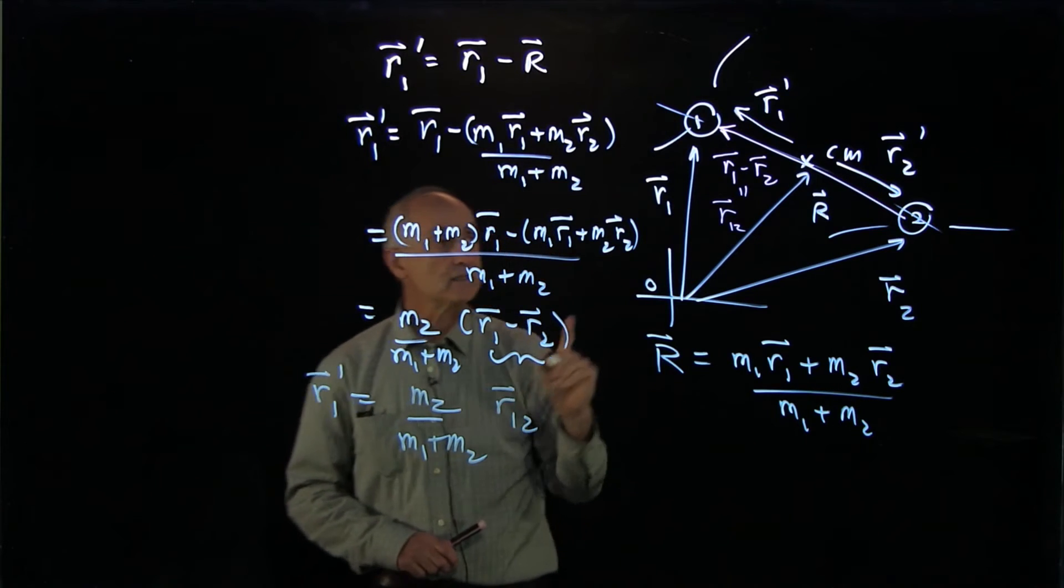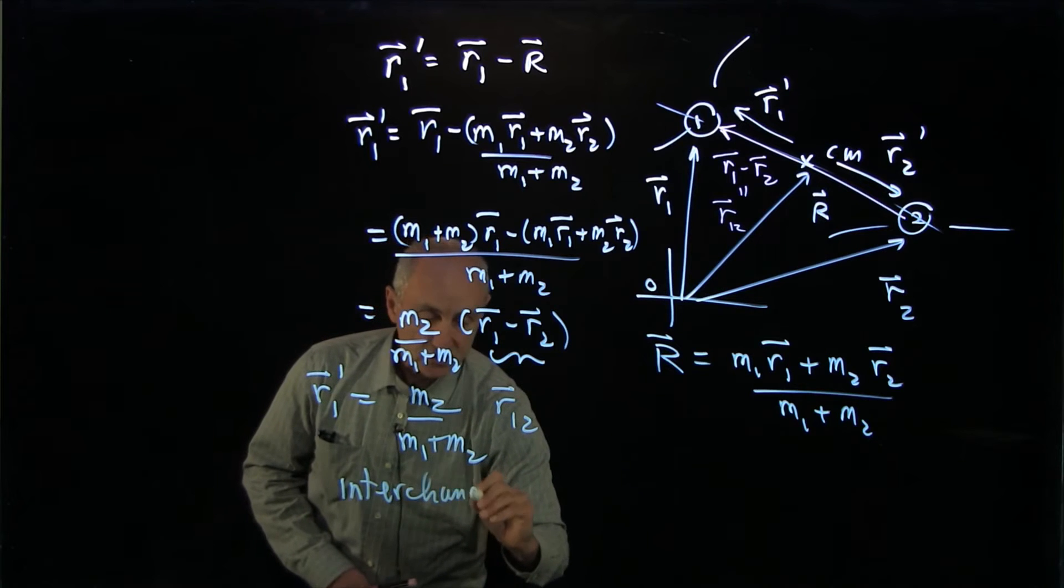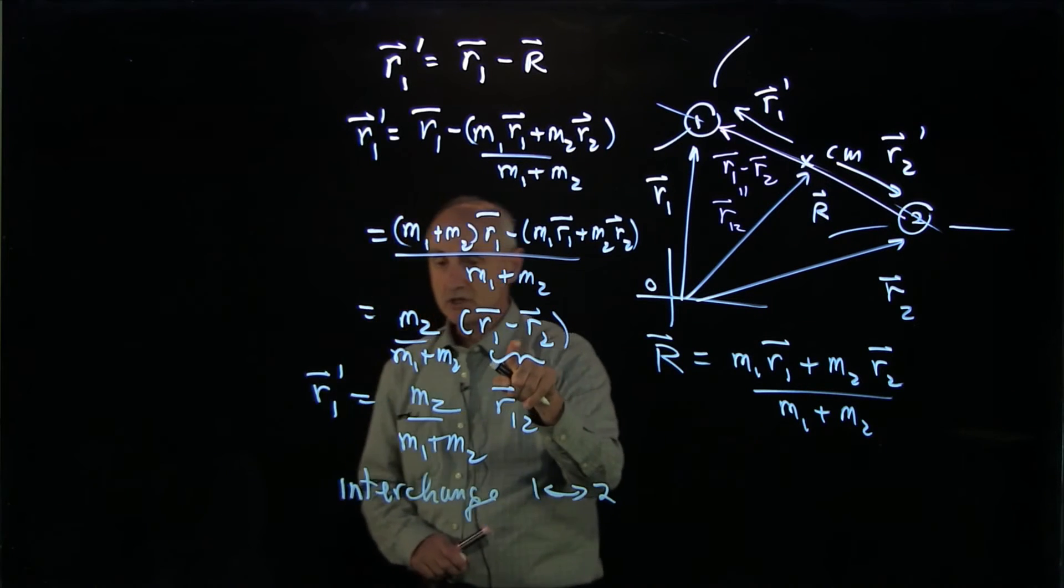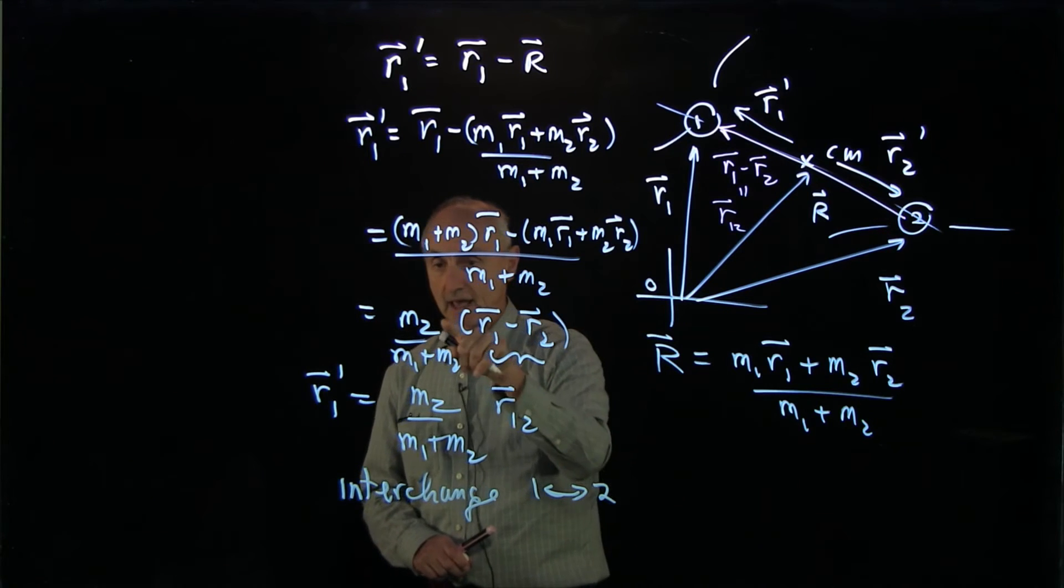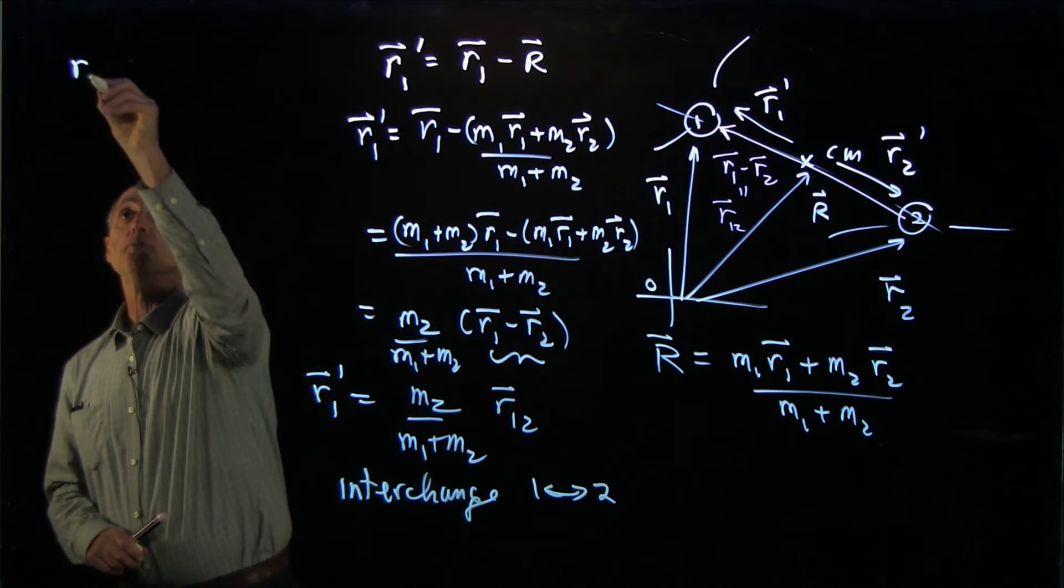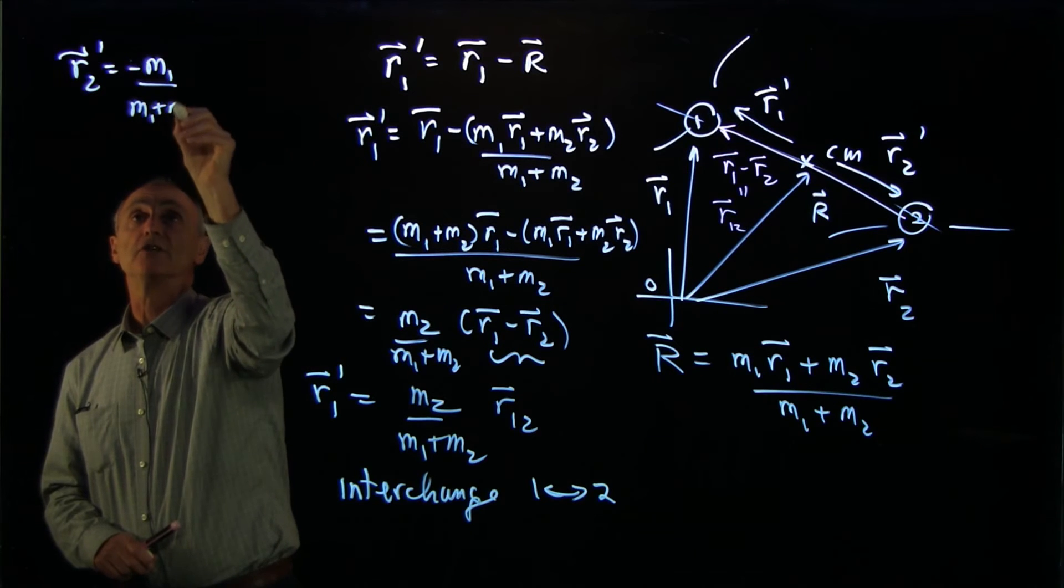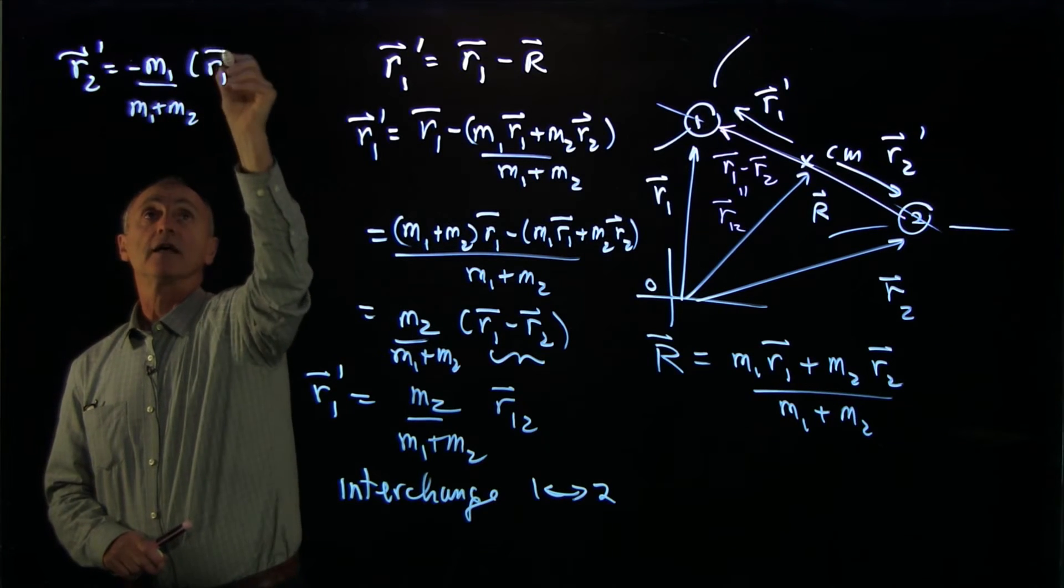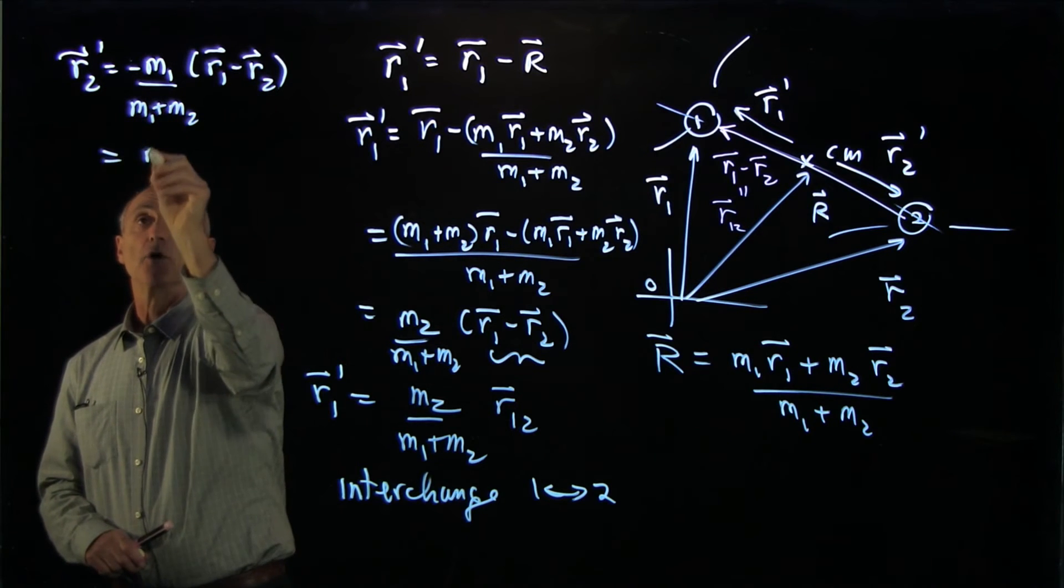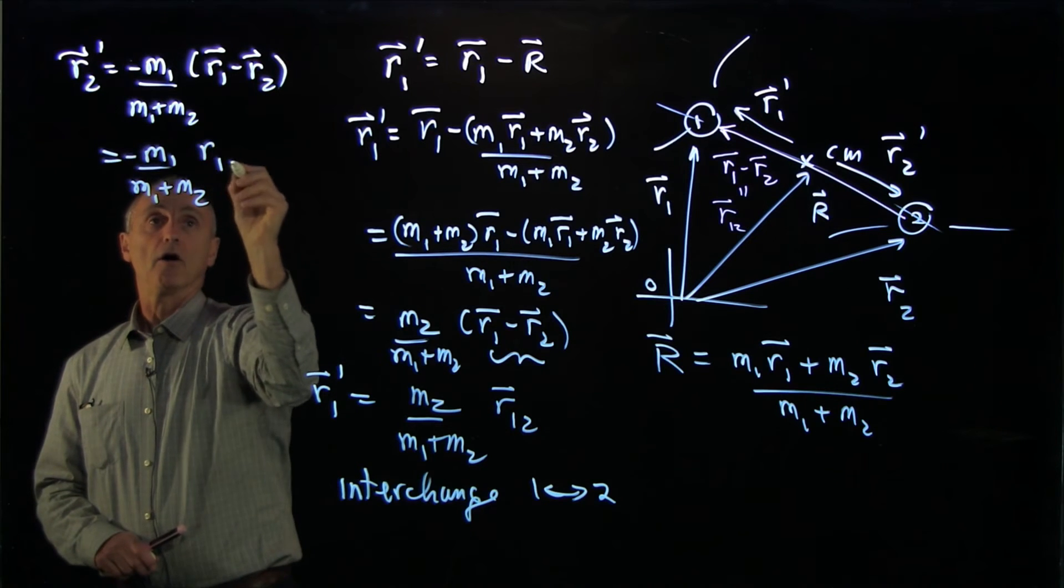You can easily see that if you interchange the indices 1 and 2, the only thing that changes here is a sign. If we interchange 1 and 2, this is an exercise that you can do, then r2 prime is minus m1. I'm interchanging the indices. The minus sign came from the interchange of 1 and 2. So we get m1 over m1 plus m2 with a minus sign r12.